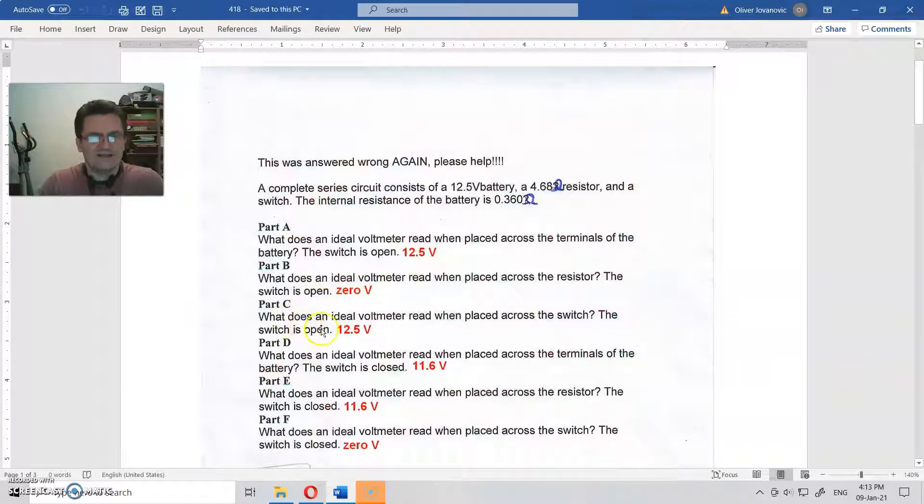Part C: What does an ideal voltmeter read when placed across the switch? The switch is open. An ideal voltmeter is open, so it does not conduct any kind of electricity through it. There is no current throughout an ideal voltmeter.